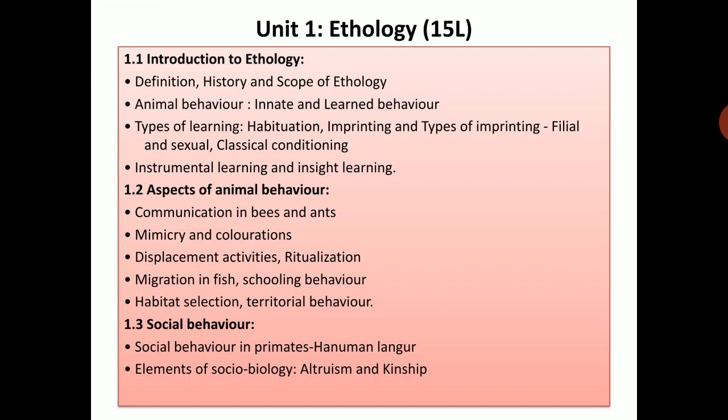Mimicry and coloration — that is also another aspect of behavior. You think that only human beings can mimic, but it is not like that. Even animals have this ability to do mimicry and they can also change their colors. They can develop colors so that they can behave in different manners. Displacement activities and ritualizations are also particular kinds of behavior we are going to learn. Migration in fish and schooling behavior in fish are very interesting behaviors. We will discuss the migration of fish and schooling behavior in fish when we go into this particular topic.